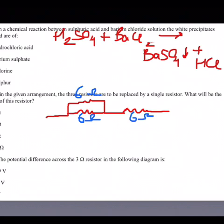In the question it has been given that the three resistors are to be replaced by a single resistor. You can see these two resistors are arranged in parallel, so firstly you have to solve this, then the resultant will be in series with this.